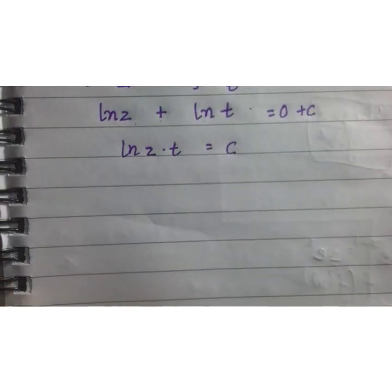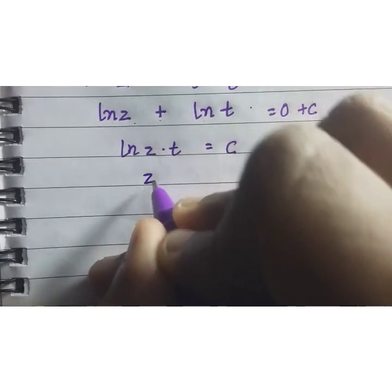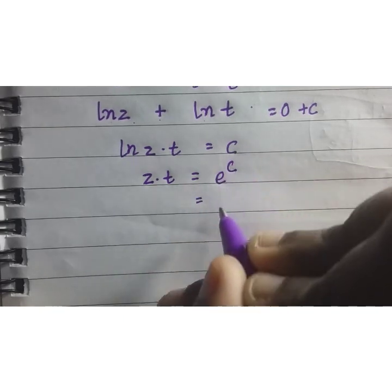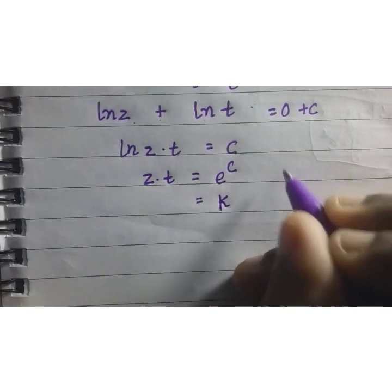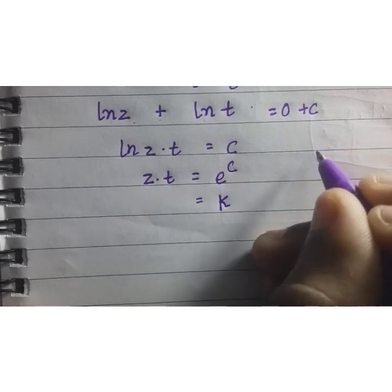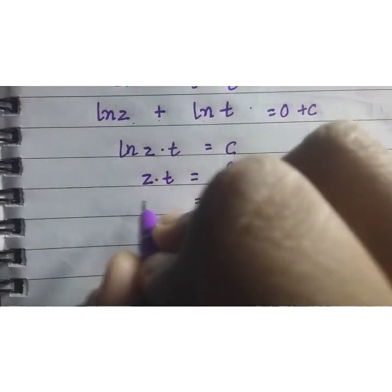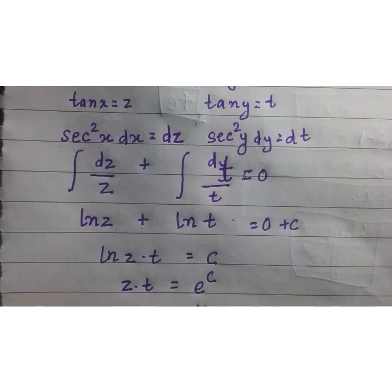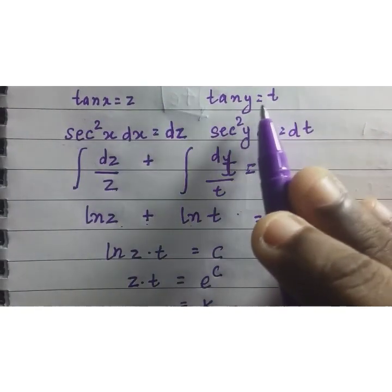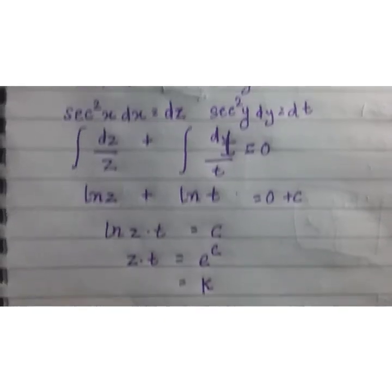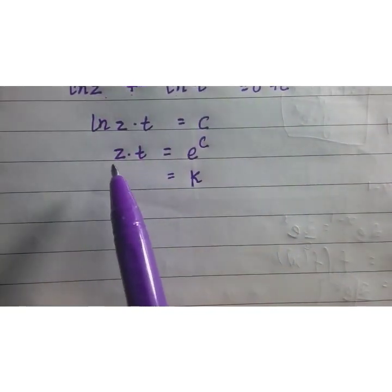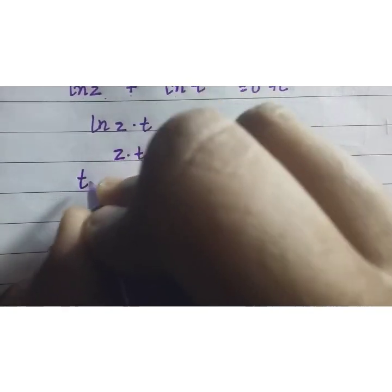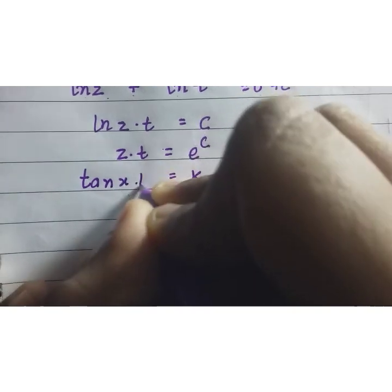c is our constant of integration. Now, z into t is equal to e raised to c. Let us write it as a constant value because e raised to power any constant value is a constant value. Now, z we substituted to be tan(x) and t we substituted to be tan(y). So, now we are going to place the values of z and t over here. That will be tan(x) into tan(y).